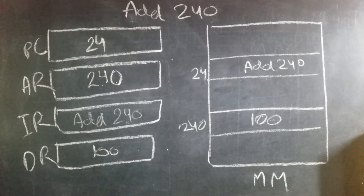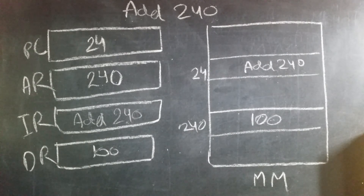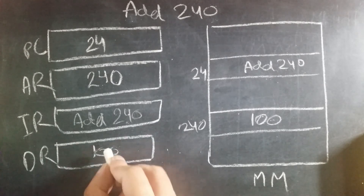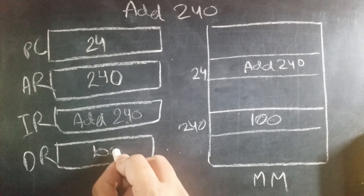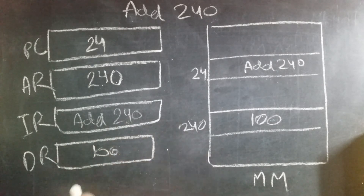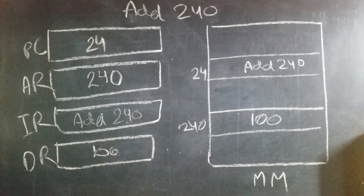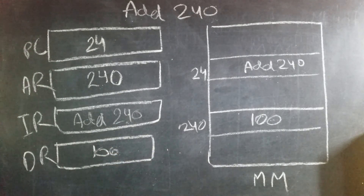Now, since we have already seen that ADD 240 means add to accumulator the sum of accumulator and the data stored in memory location 240, the data stored in memory location 240 is now in data register. We will simply add to accumulator the contents of data register and store the result in accumulator. Thank you.